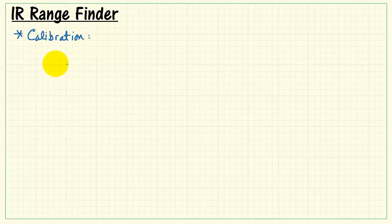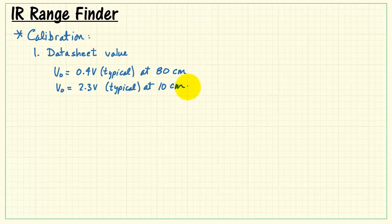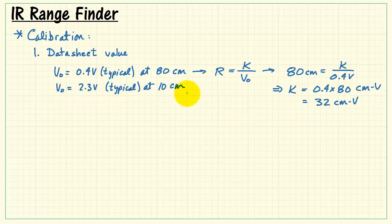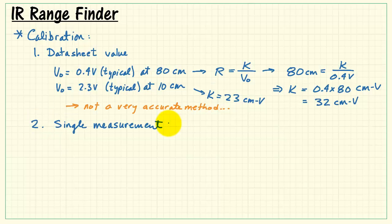Let's take a look at how you could come up with some calibration values for the sensor. First possibility, we could look at the datasheet, and it tells us that we have 0.4 volts typical at 80 centimeters, and 2.3 volts typical at 10 centimeters. Based on using range is the calibration constant divided by the output voltage, we would say 80 centimeters, 0.4 volts, solve for k, and we have 32 centimeter volts for that calibration constant. Now the problem is, if we try the same thing with the other value from the datasheet, we get 23 centimeter volts. Again, these are typical numbers. It's not a very accurate way of getting a single value for k.